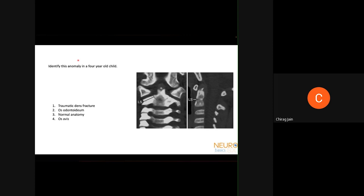The answer is normal anatomy, because the basal synchondrosis is supposed to fuse with the C2 body by a maximum of five to six years — so you must wait until five to six years before calling it abnormal.